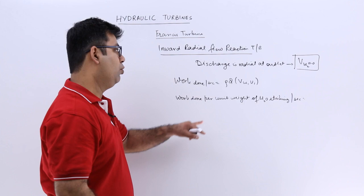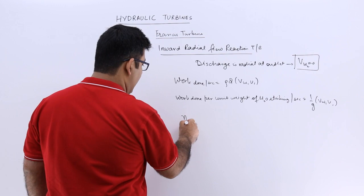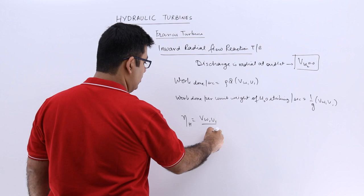That will be 1 by G into Vw1 into U1. And if you want to write down the hydraulic efficiency, then it will be Vw1 into U1 upon the gravity into the net head.